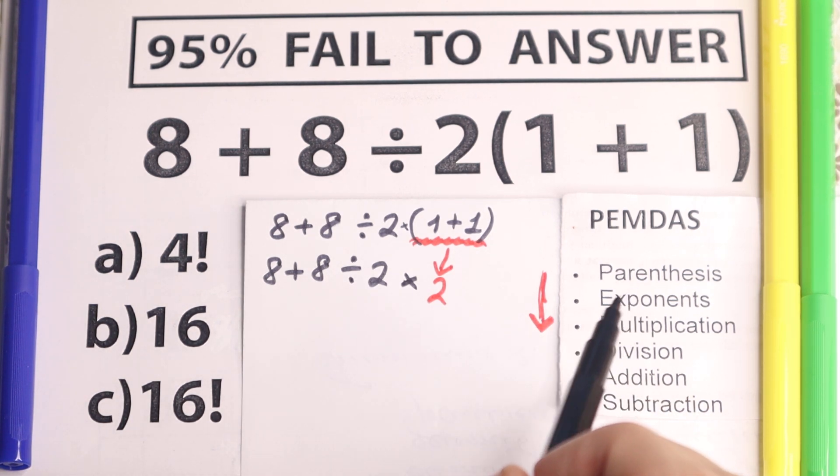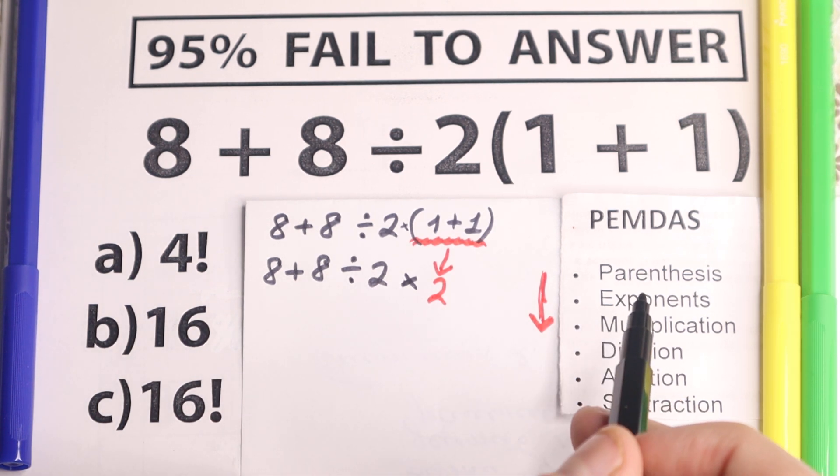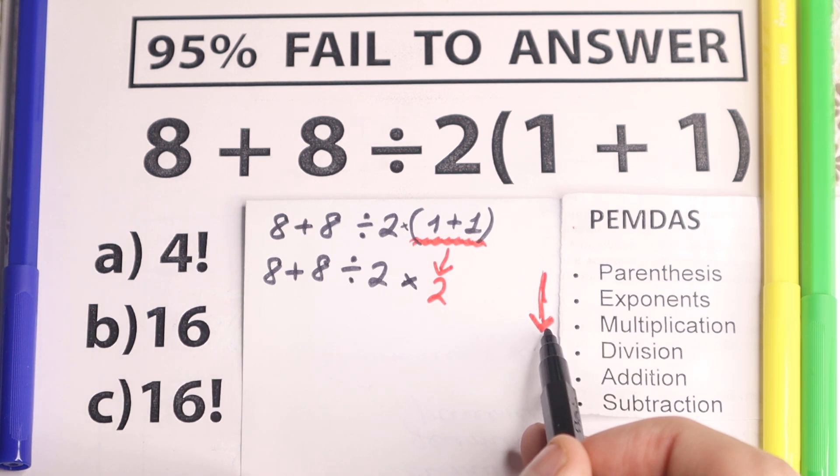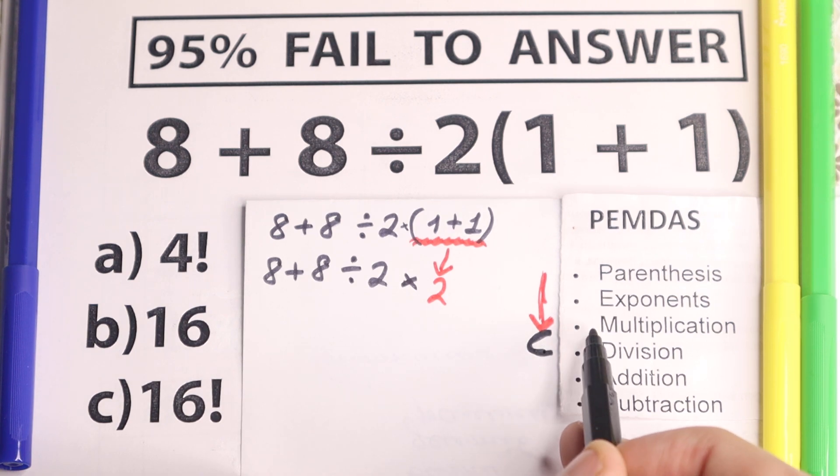Multiplication, and this is a really common mistake right here, because a lot of students say, this is multiplication, so let's multiply it first. But one really interesting moment, multiplication, we need to work with multiplication in one group with division. So multiplication and division is one group.